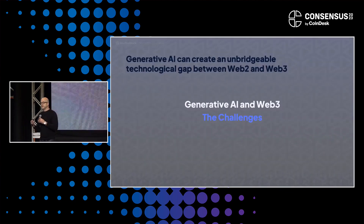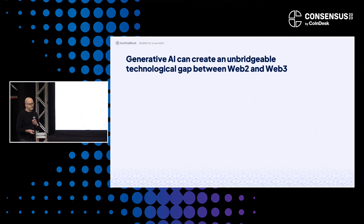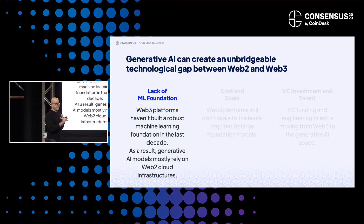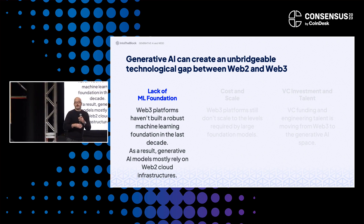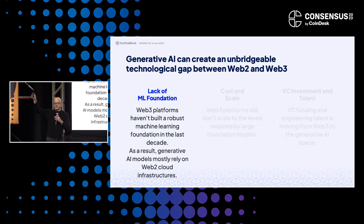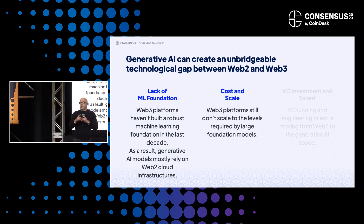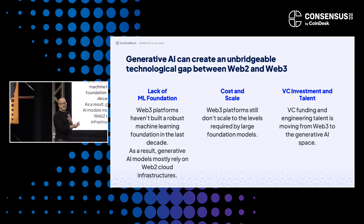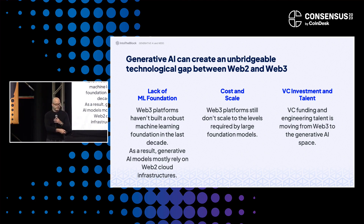There are also challenges. I published a controversial piece in Coindesk that essentially said generative AI might be bad for Web3. Why? For a decade, we never bothered to build a machine learning foundation in Web3. Now all that innovation is happening in Web2 and Web3 is really not participating — among other things because running these models in distributed blockchain runtimes is very costly, and we don't have blockchain runtimes optimized for it. Also, a lot of VC and engineering talent is going over to AI because it's the hottest trend, and Web3 is suffering.